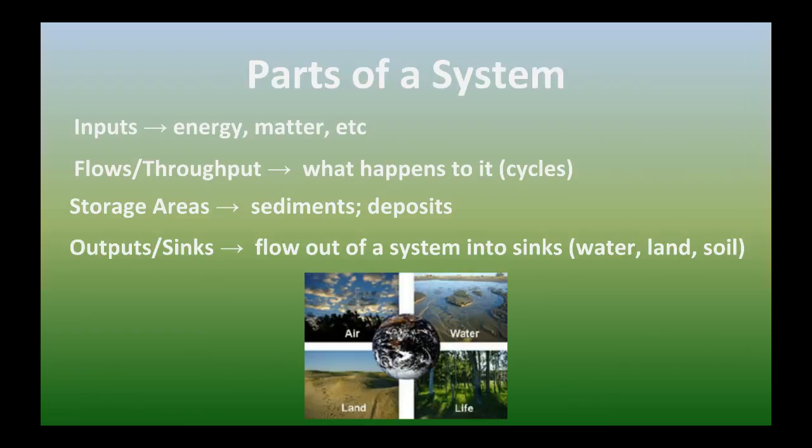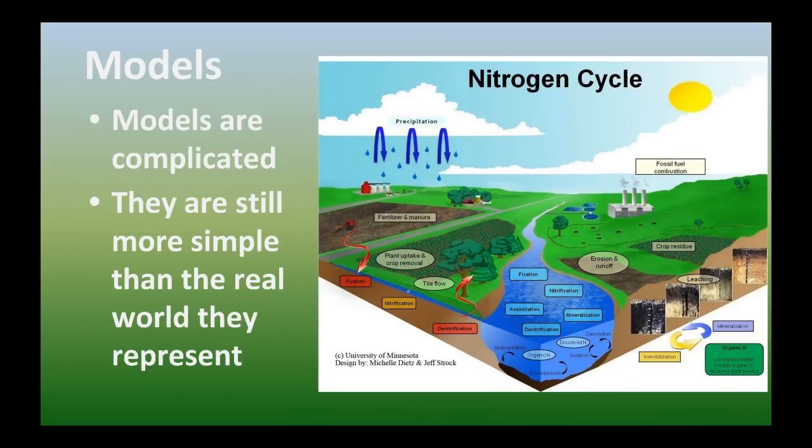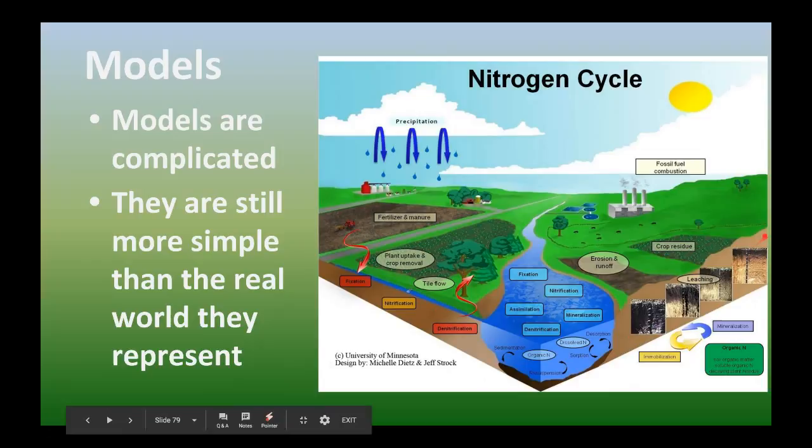And then eventually, how does it get out? You know, so it's this system and you've seen the models with the arrows of things going in, things coming out. And they're very, very complicated because this nitrogen cycle just doesn't occur in this small area in the picture.